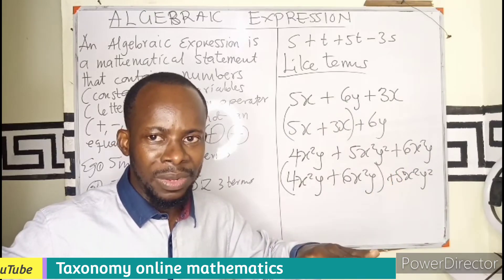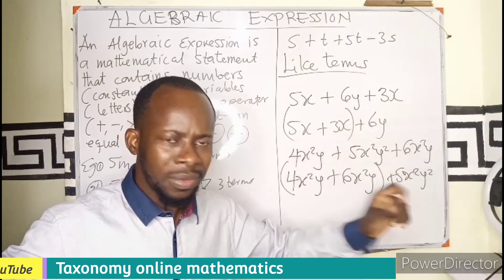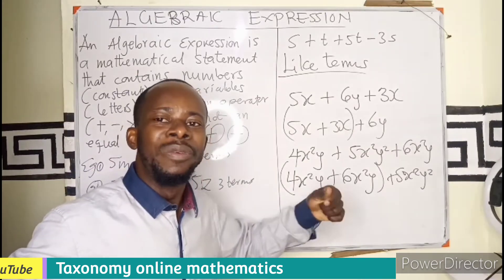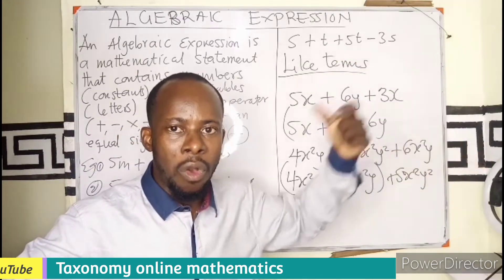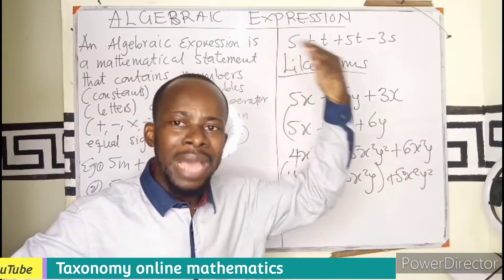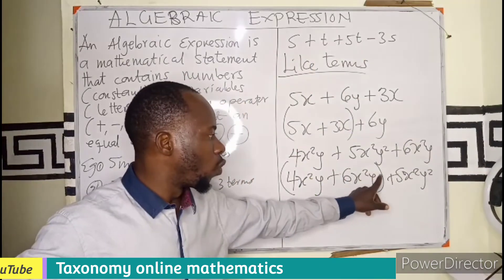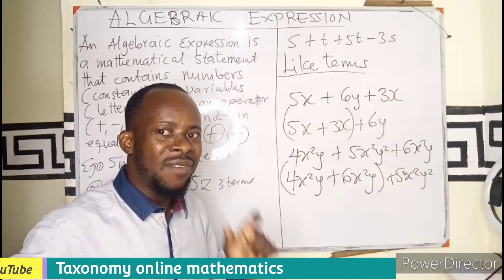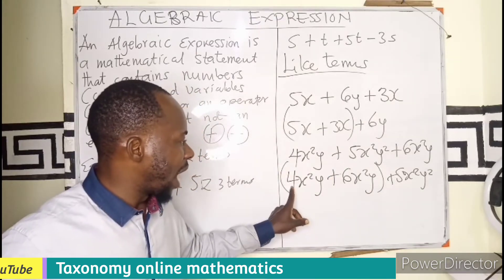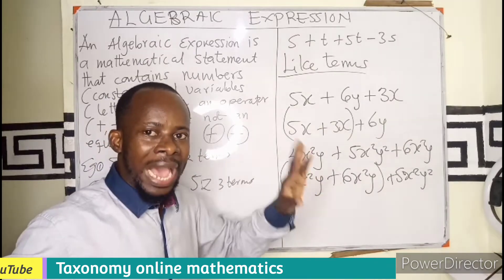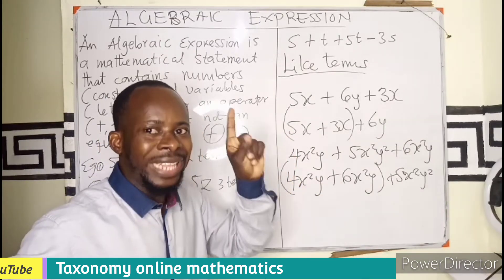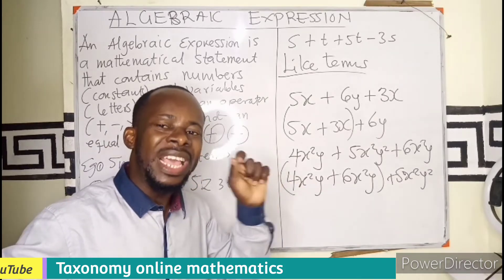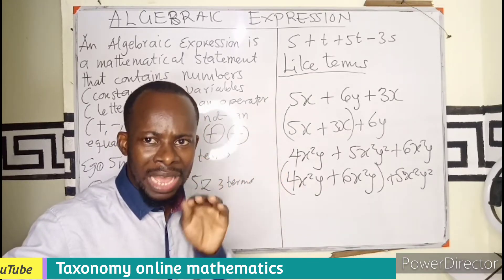Like terms are terms having the same variable with the same order, meaning the same exponent. Multiplication combines the X squared and the Y together into one term — that is why we call it a single term even though it contains multiple elements.